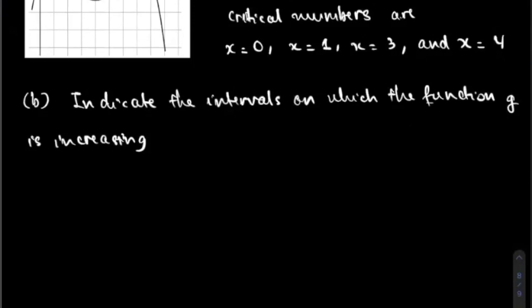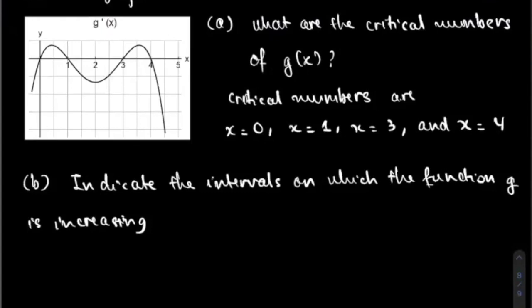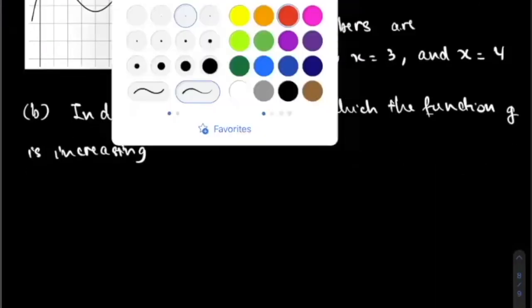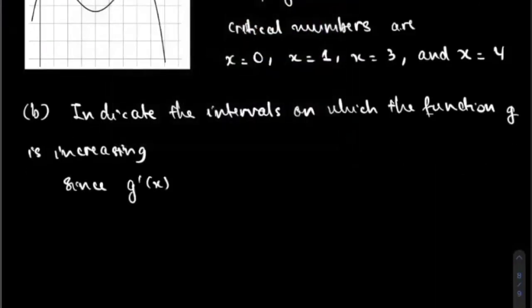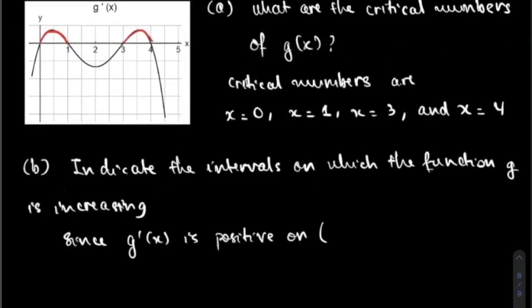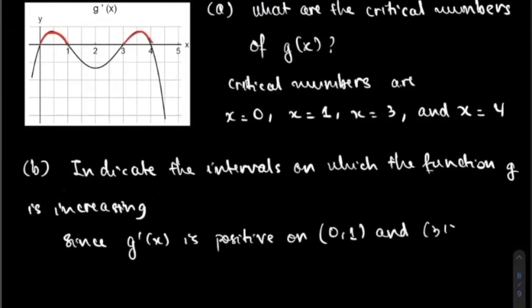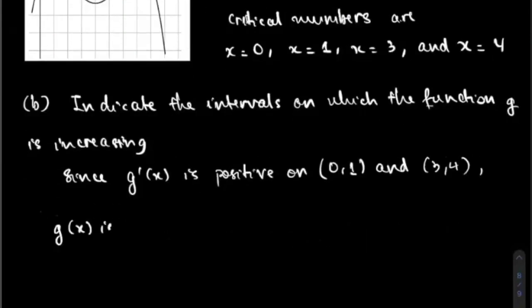How can you find the interval on which the original function is increasing? The function is increasing when the derivative is positive. So look at the graph — this part of the curve, G prime is positive, and this part of the curve, G prime is positive as well. Since G prime of X is positive on the interval from zero to one and from three to four, G of X is increasing on those intervals.